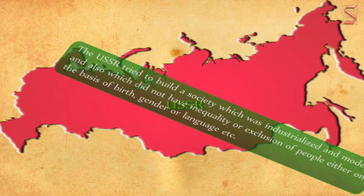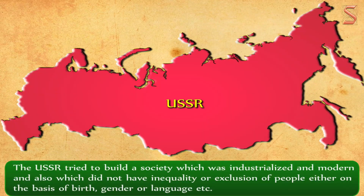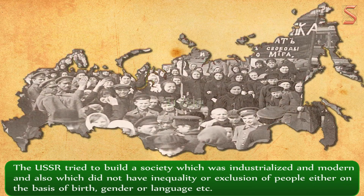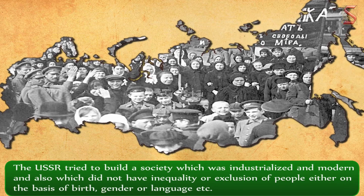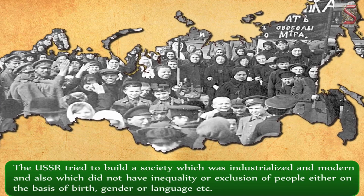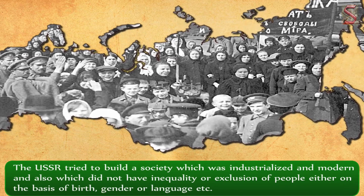The Bolsheviks then announced the end of the Russian Empire and allowed various nations to become independent. The USSR tried to build a society which was industrialized and modern, and also which did not have inequality or exclusion of people either on the basis of birth, gender, or language, etc.